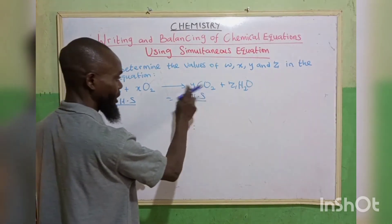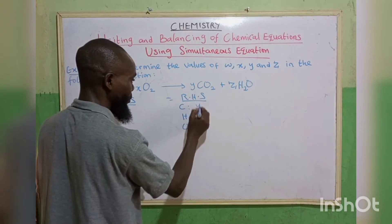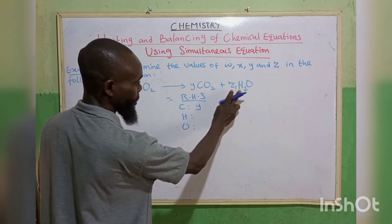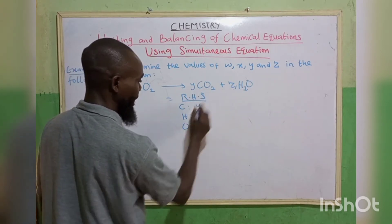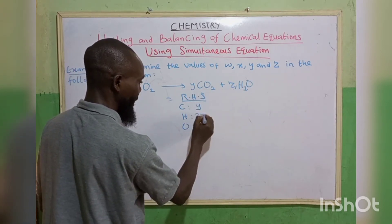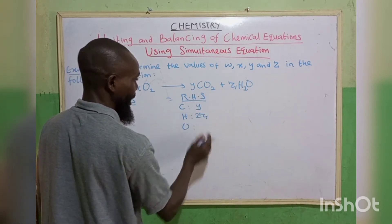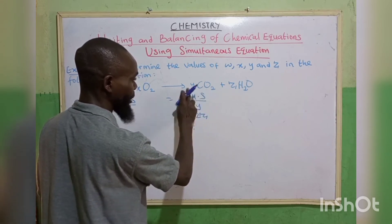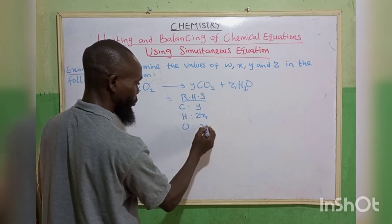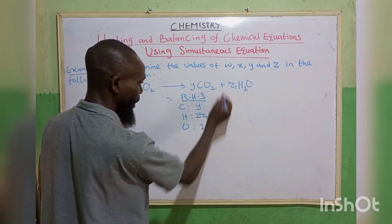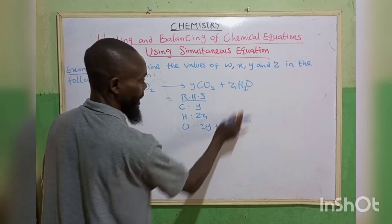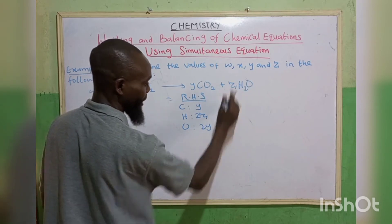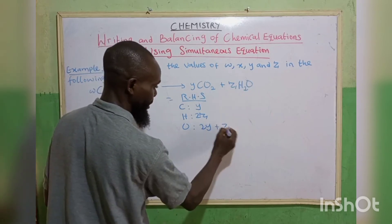On the right hand side: carbon is 1 times y giving y; hydrogen is 2 times z giving 2z; oxygen from CO₂ is 2 times y giving 2y, plus oxygen from H₂O is 1 times z giving z.